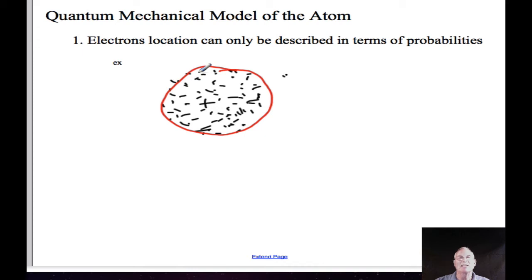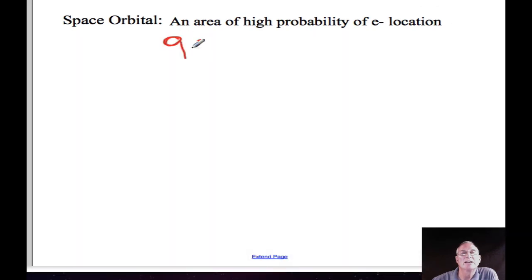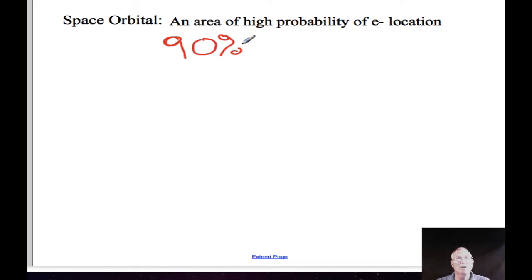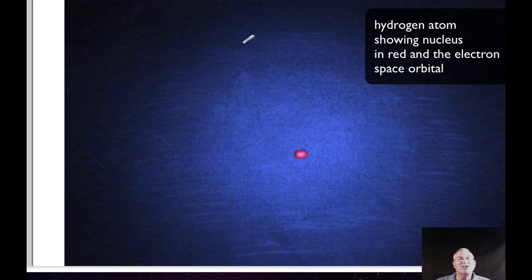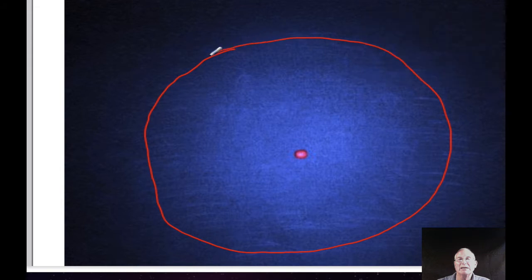What these scientists did was describe the electron location in terms of what they called space orbitals — an area of high probability of electron location. A space orbital is an area in which the electron is likely to be found 90% of the time around a given nucleus. So the first part of this model is that electron location can only be described in terms of probability. A picture of a hydrogen atom becomes much fuzzier than in Bohr's model; instead of a defined orbital, there's now a region around the nucleus where the electron is likely to be located 90% of the time.